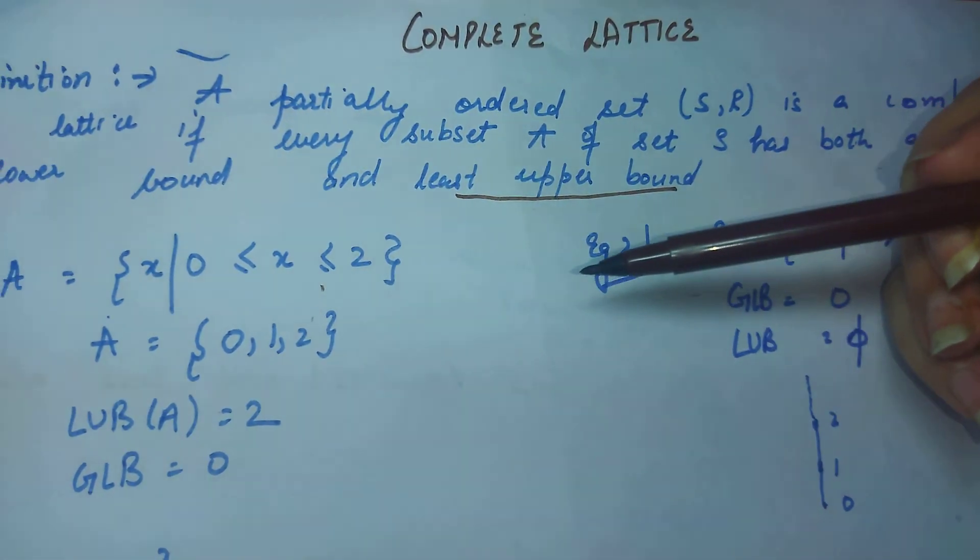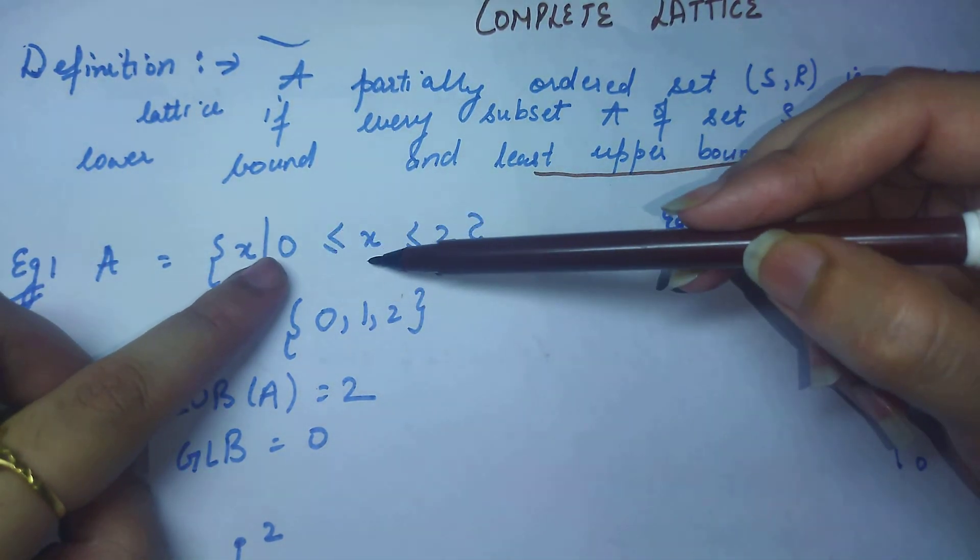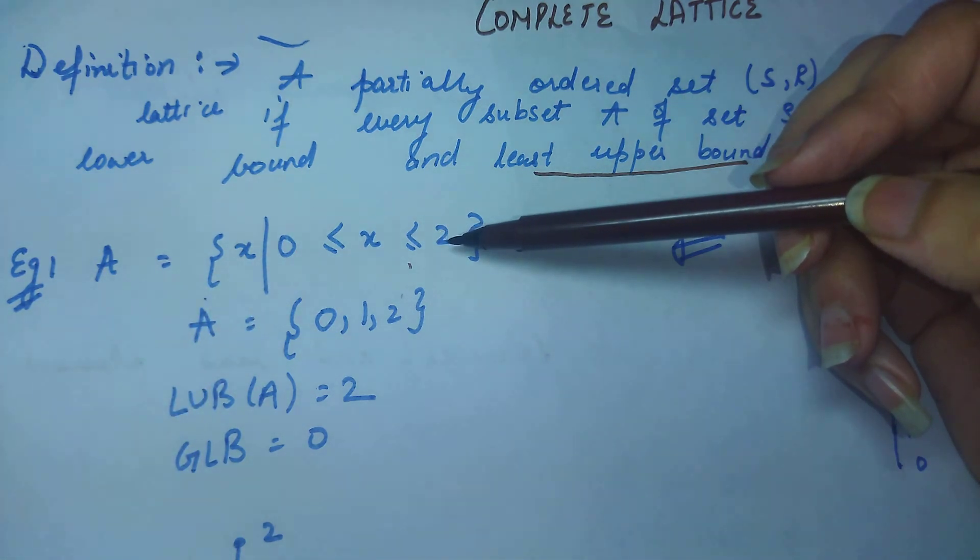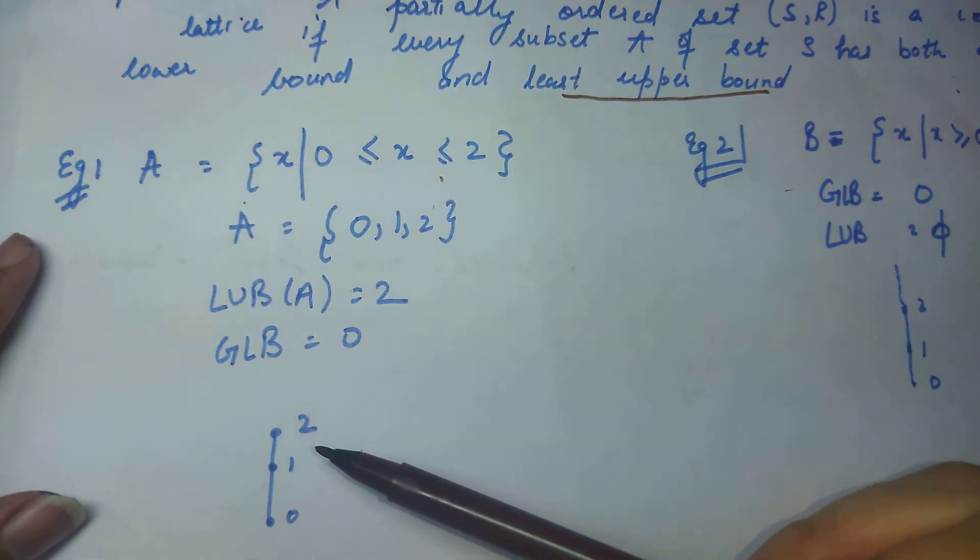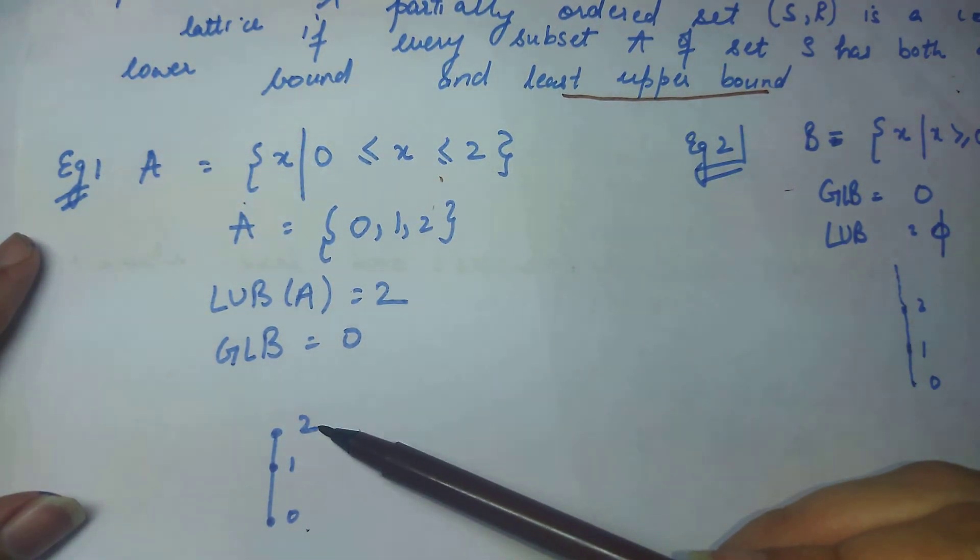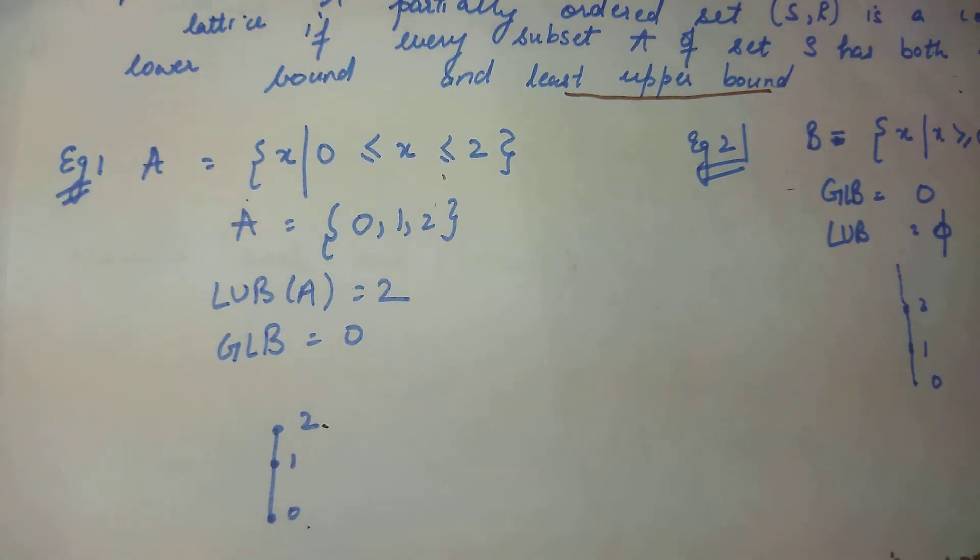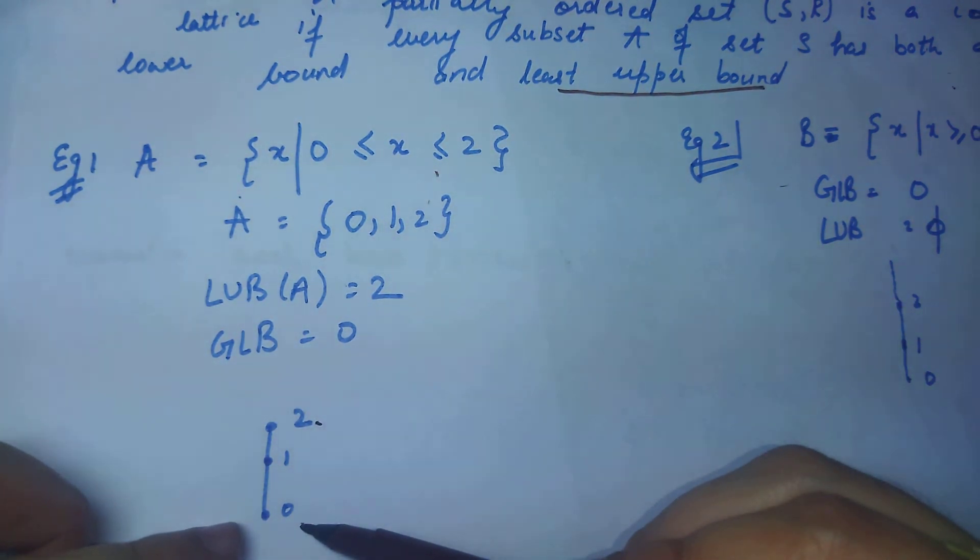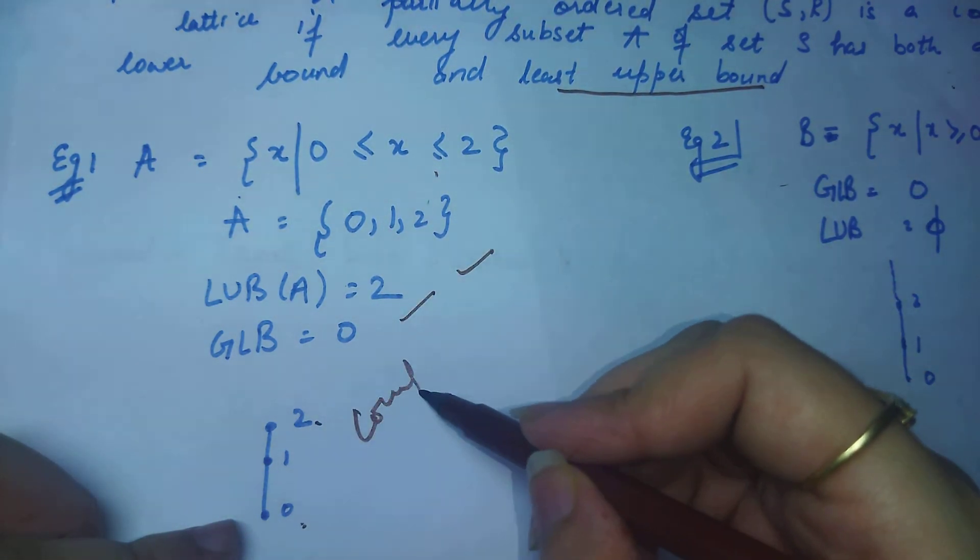Now see the first example I will explain. A = {x | 0 ≤ x ≤ 2}, it means 0 will start and 2 will end. Now see what is the least upper bound and greatest lower bound. So 2 will be upper bound and what is the greatest lower bound is 0, so obviously complete lattice will be called.